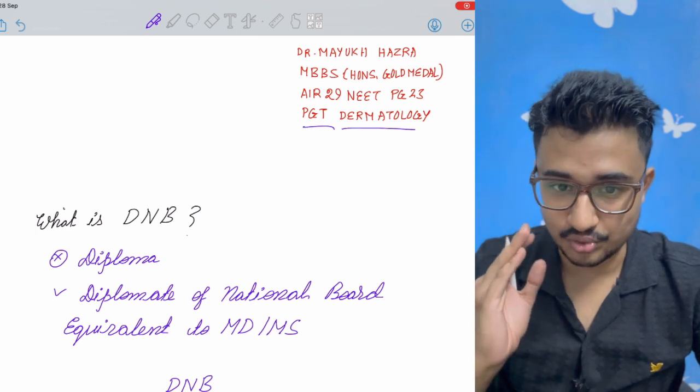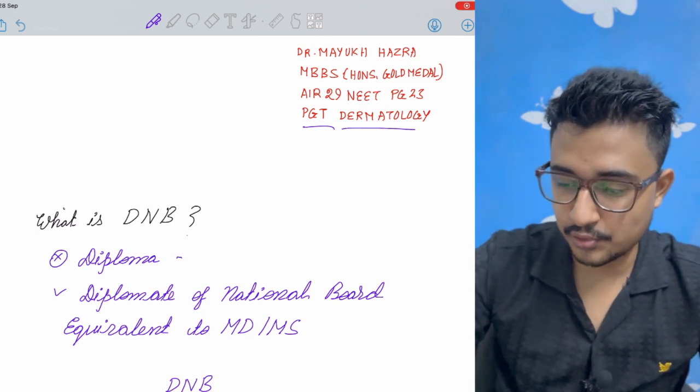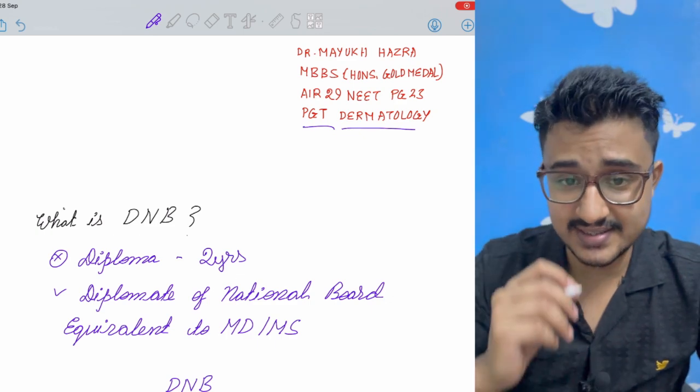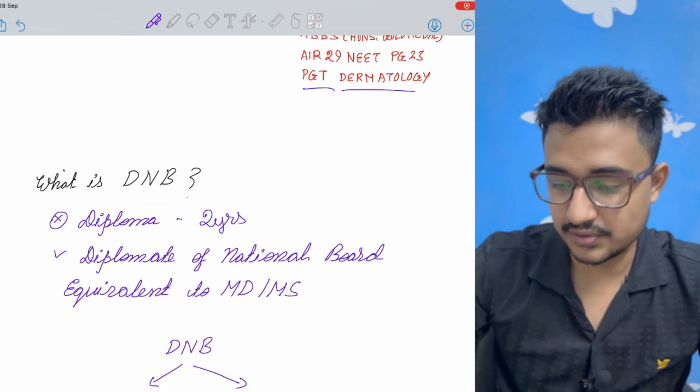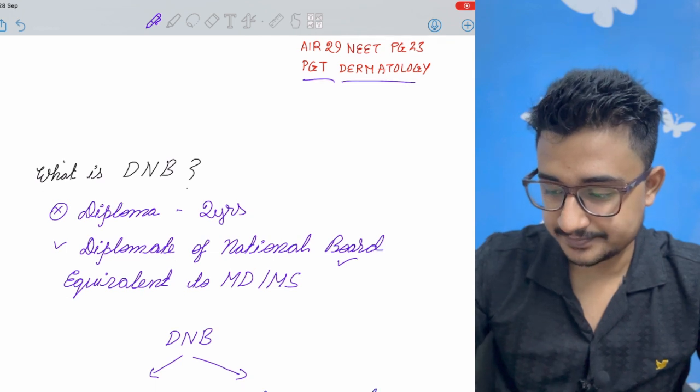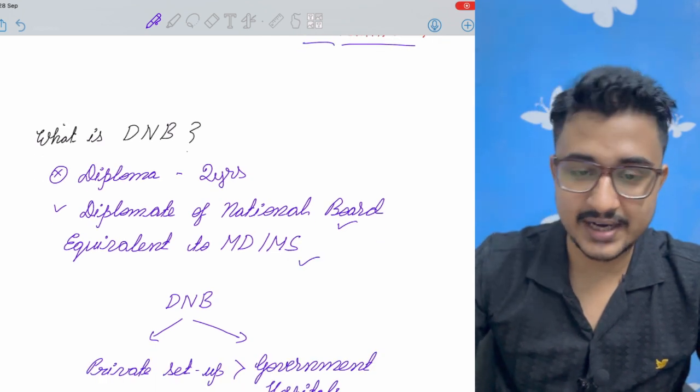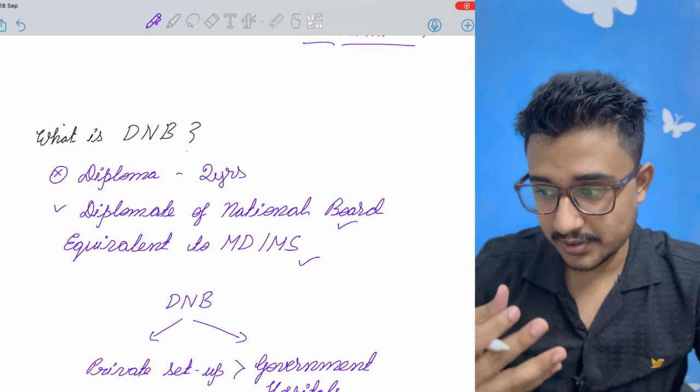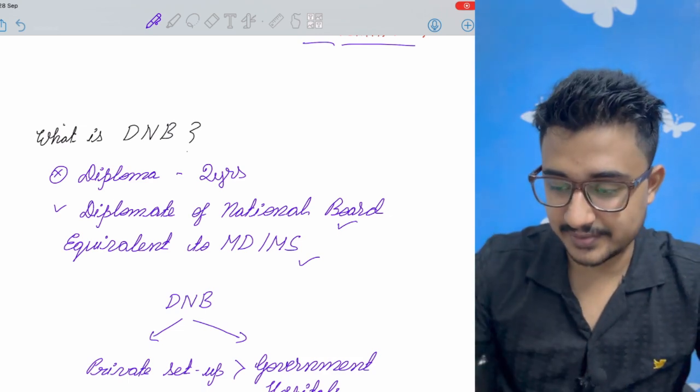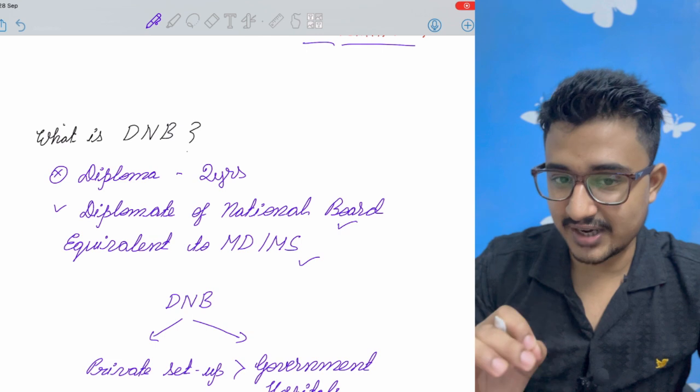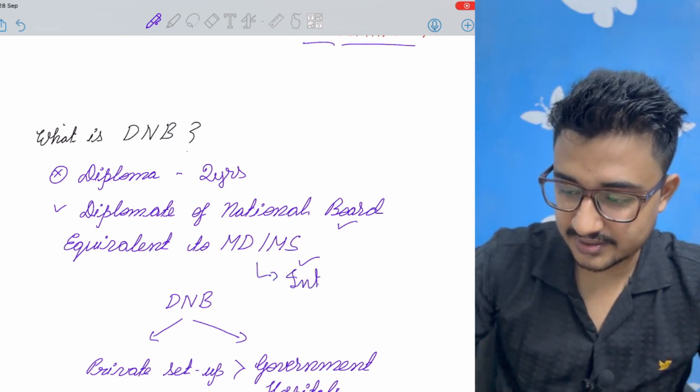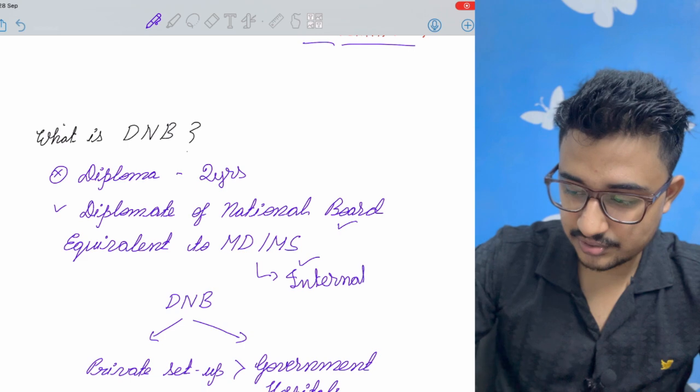No it is not a diploma course because diploma courses are two years but DNB is a three years course. So the full form of DNB is diplomat of national board and it is equivalent to that of MD and MS. Though people perception rate is not that much high as that of MDMS but it is equivalent to MDMS and it has an international recognition that is an advantage.